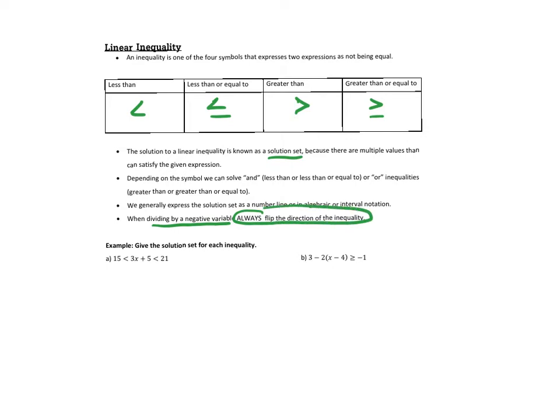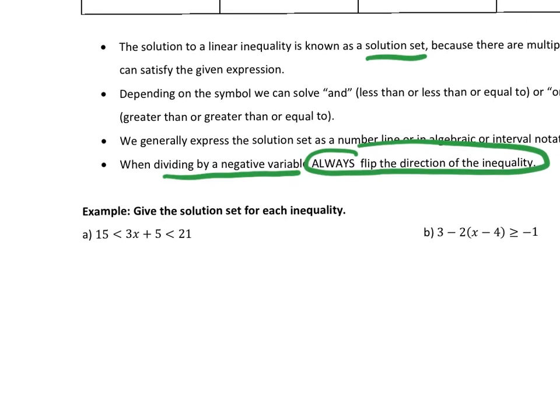Look at this first problem. This is a less than problem, also called a compound problem. Less than really means 'and,' so you're solving an and problem, which means you're solving in between two things. Whatever you do to the middle to isolate X, you're going to do to both sides as well.